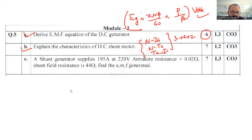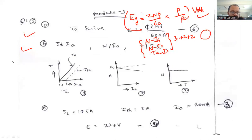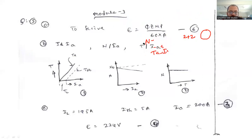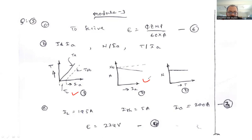Don't forget to write the mathematical expression. First, derive how torque and armature current are directly proportional and state the reason. Then plot the TAIA (torque vs. armature current), NIA (speed vs. armature current), and NTA (speed vs. torque) characteristics with scientific proof and mathematical expressions.